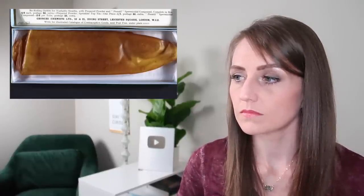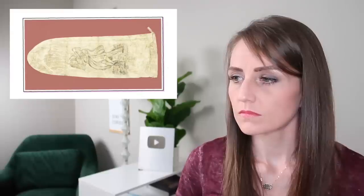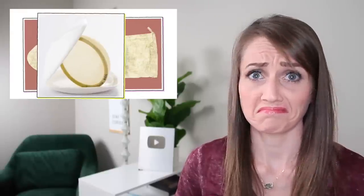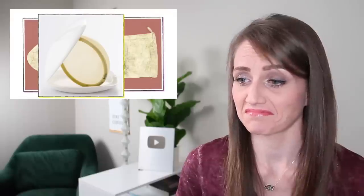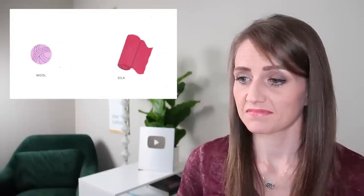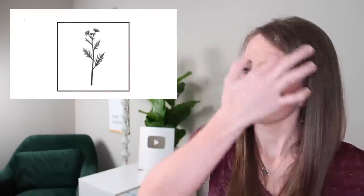There were early condoms made of animal intestines that were washed and reused. In diaphragms, early versions were just women putting various things up their vaginas. Wool, silk, crushed plants, or animal dung. We'll never know for sure how well sylphium worked because it went extinct.